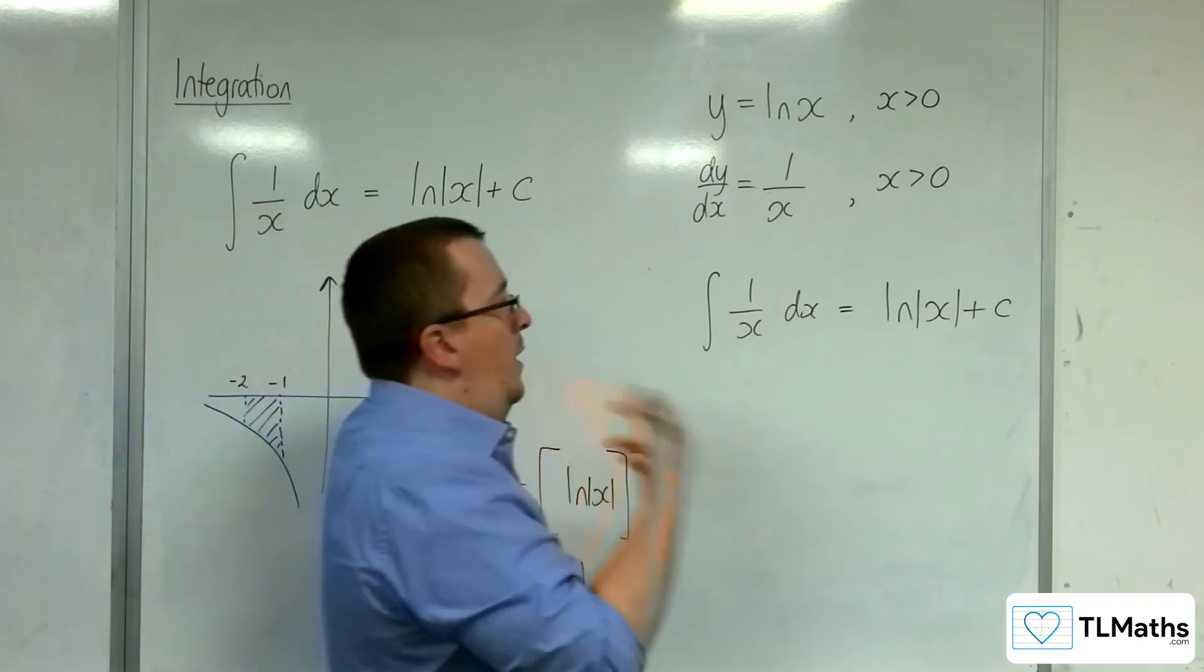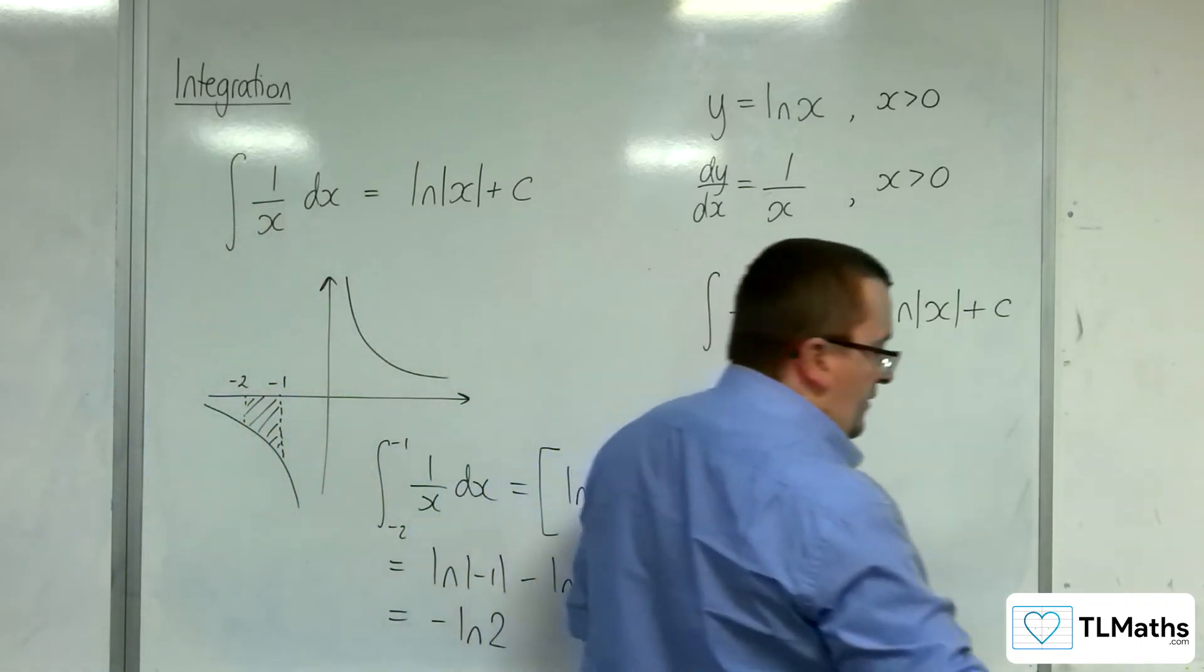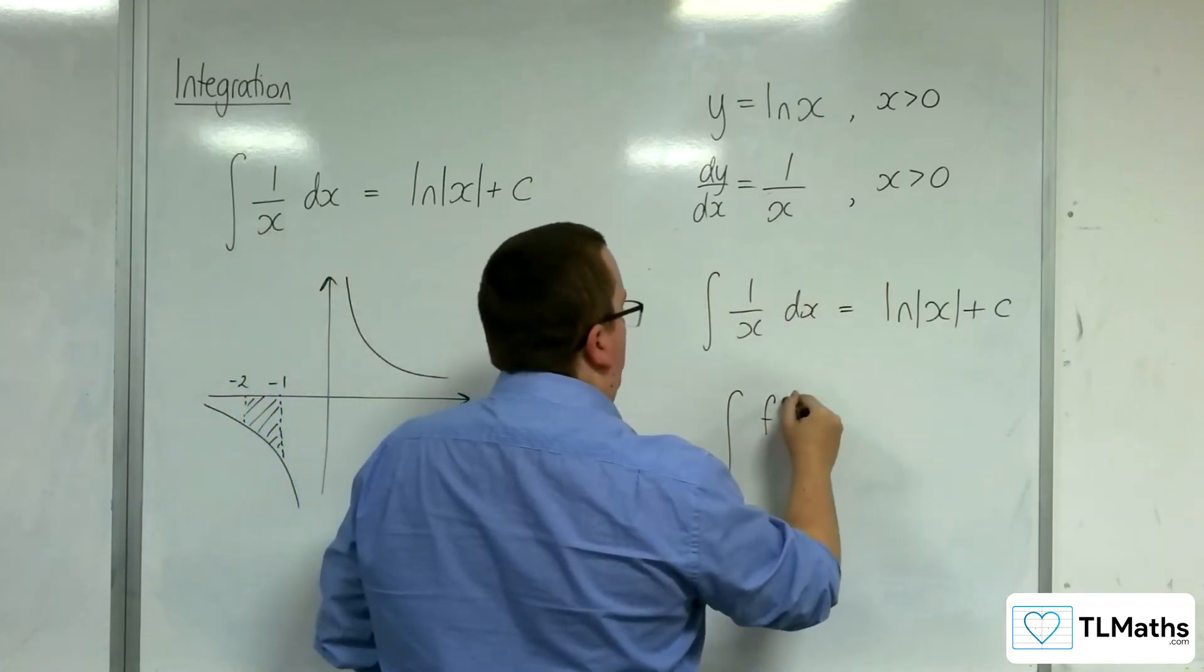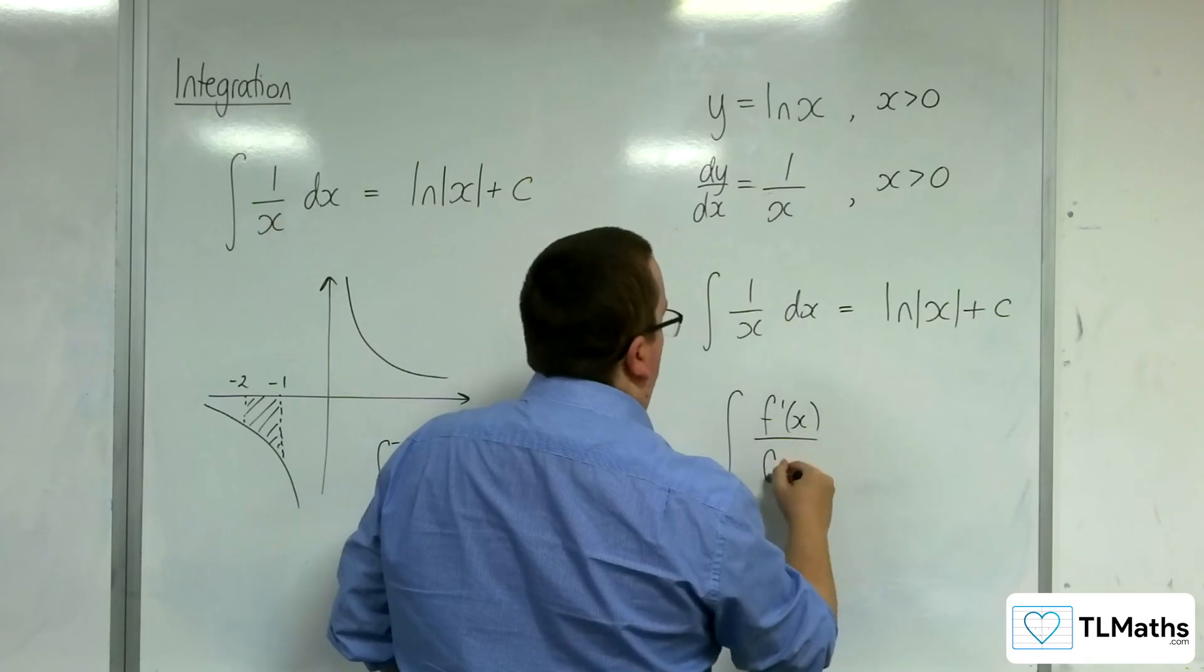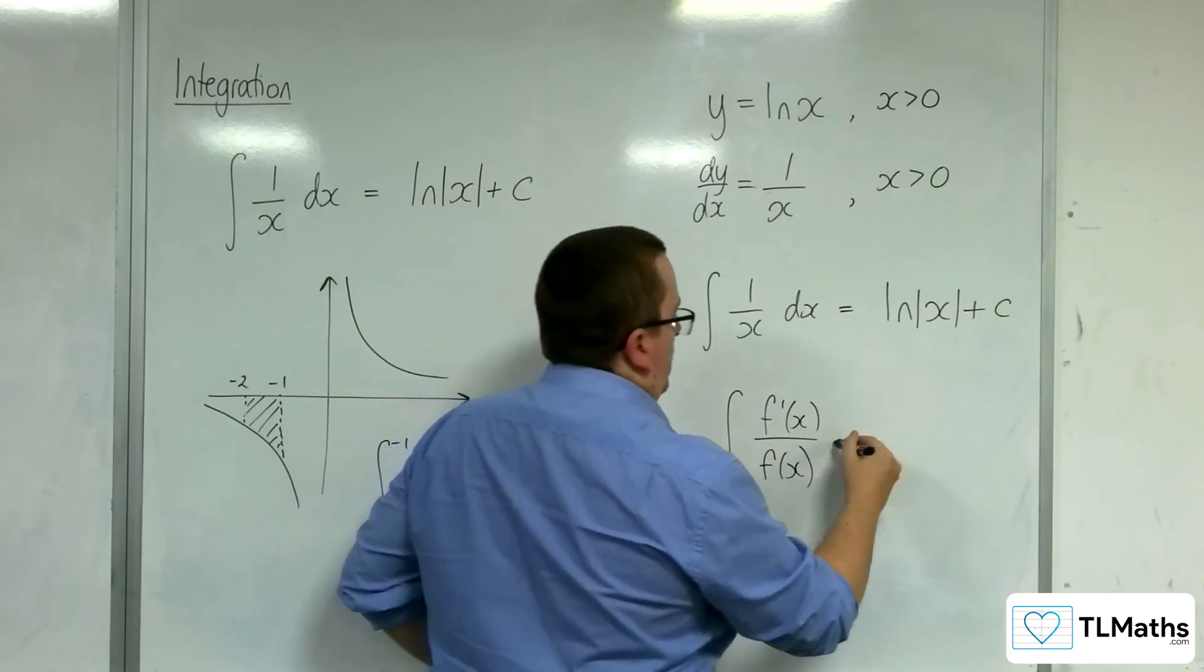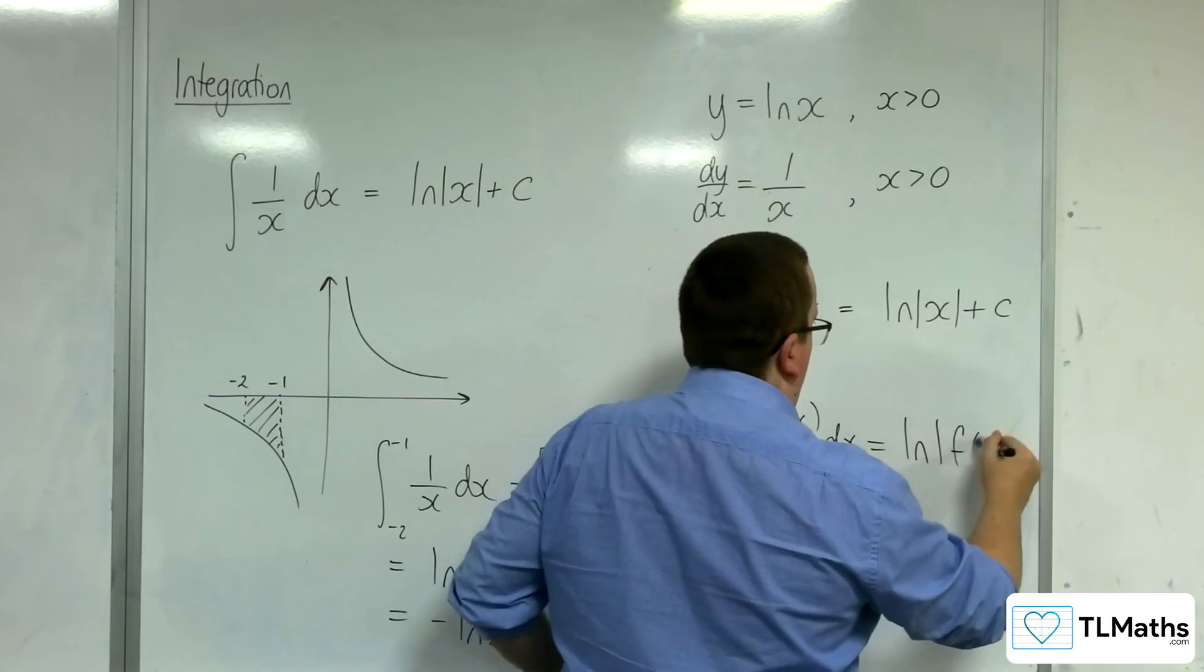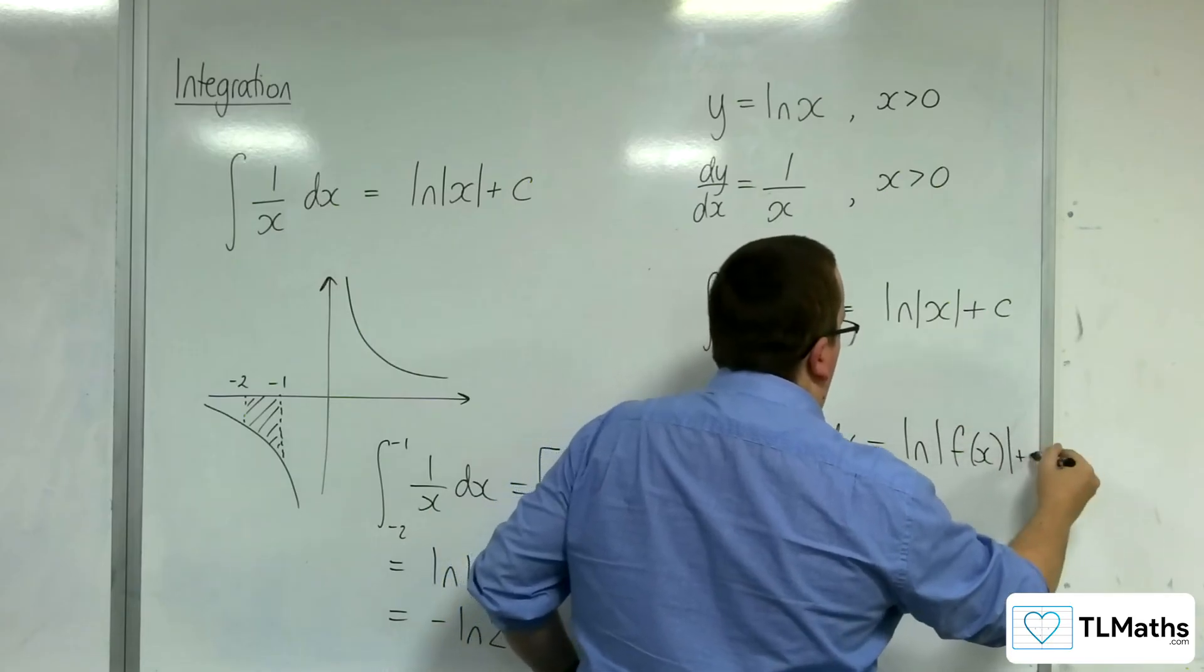So when you are integrating, and this comes in when you're integrating f prime of x over f of x as well, this should integrate to natural log of the modulus of f of x plus c. Now, that's why the modular signs should really be there.